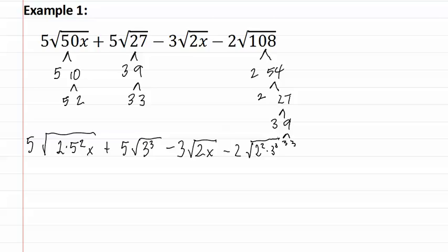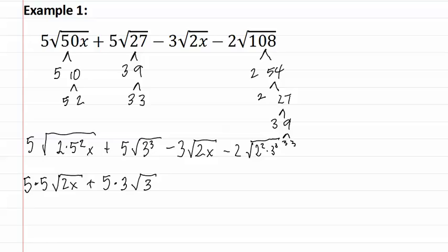Now let's simplify each of these. In this first one, we have a five that's already on the outside, but an additional five comes out, leaving two x inside. In the second one, we have a five on the outside and a three comes out with a three staying in. Remember, to determine how many come out, you do the exponent divided by the index — three divided by two — to have one come out with one remaining inside.